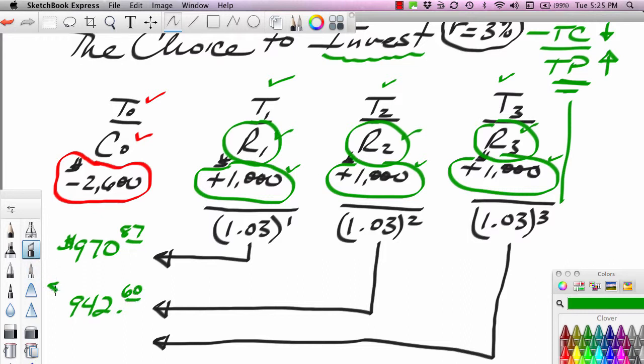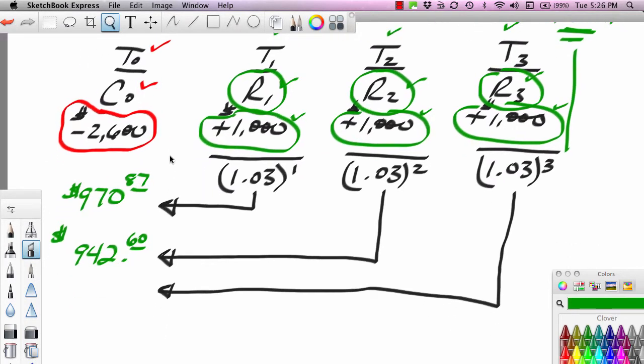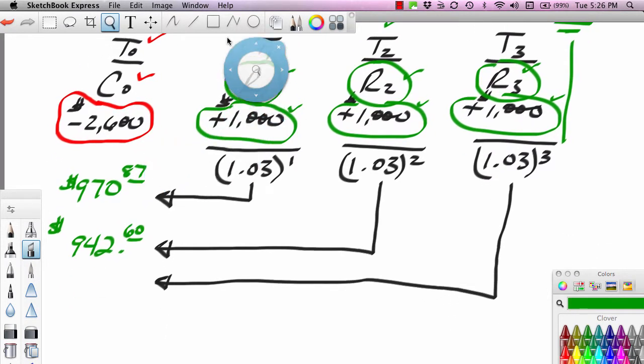We talked about this in our time value of money lesson, that the further you push money into the future, the lower its present value. If we take $1,000 three years out and bring it back three years to its present value, we get 915.14. Again, the principle applies that the further the $1,000 is out into the future, the less its present value.